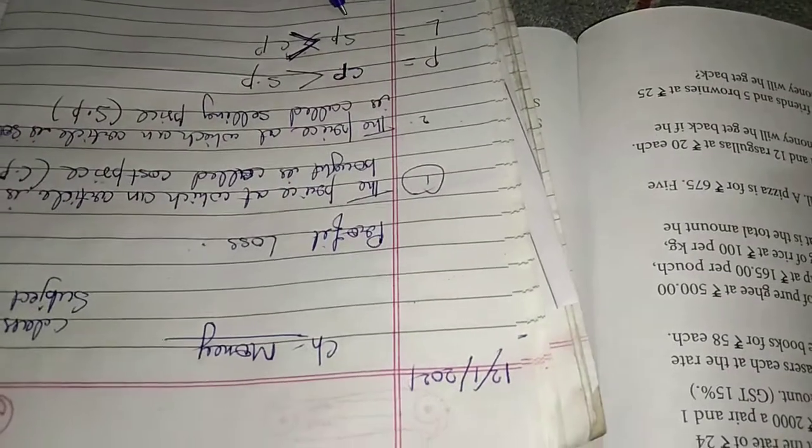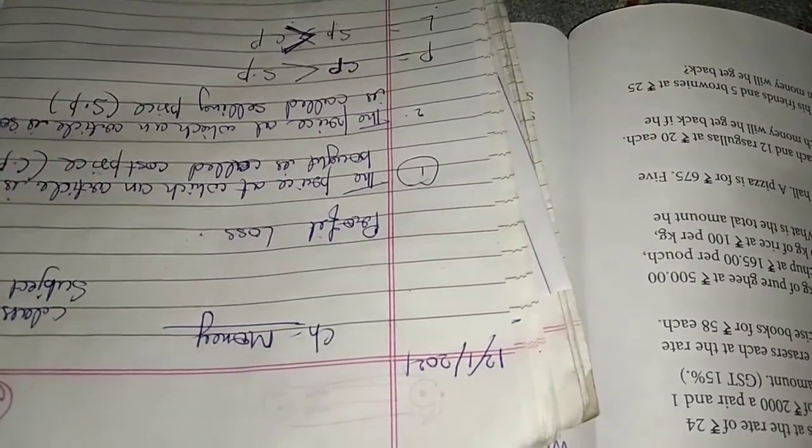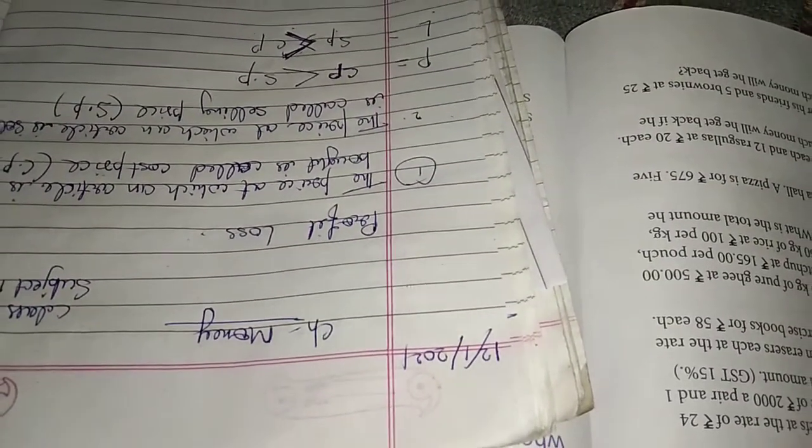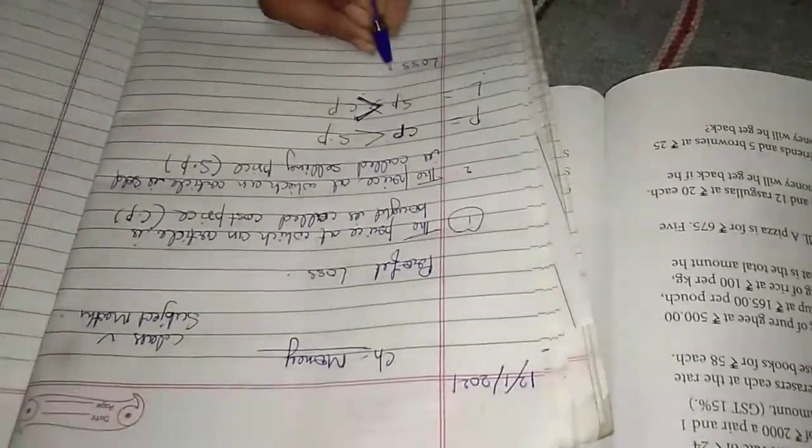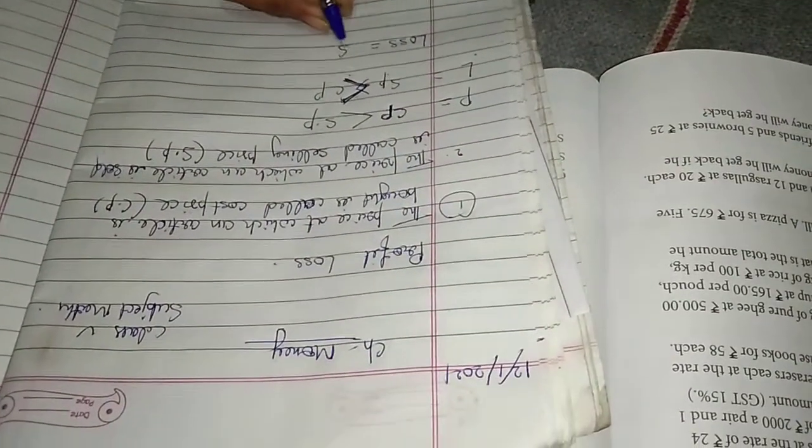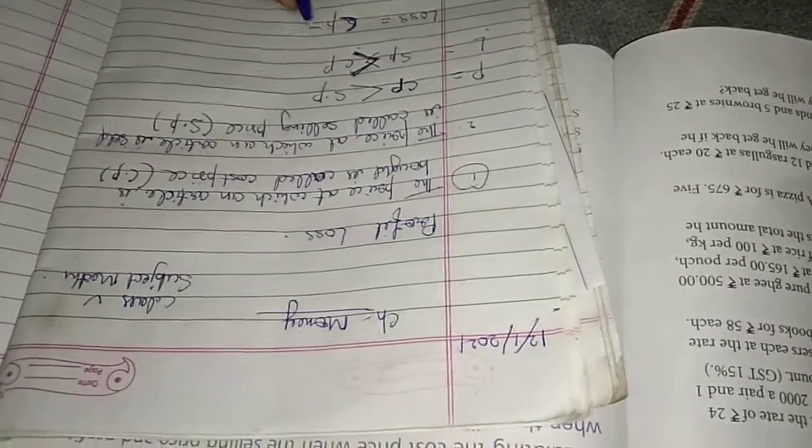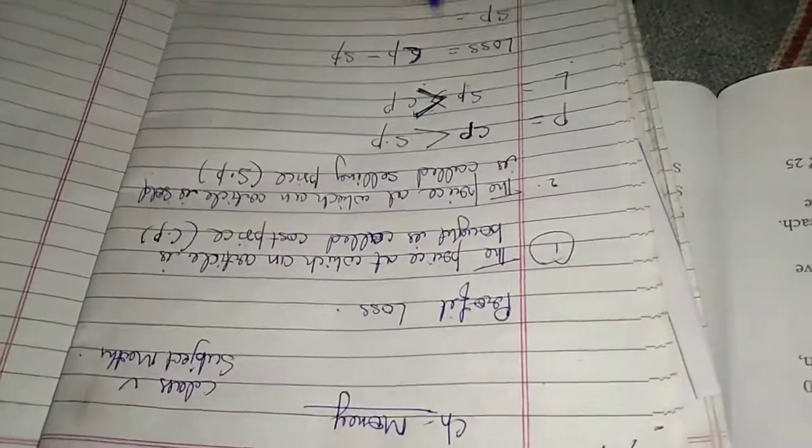It means it is loss, sorry, when SP is shorter than CP that means it is loss. So the formula of loss is equal to CP minus SP, and SP is equal...